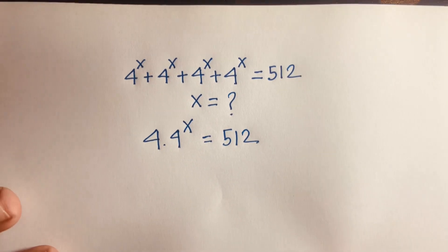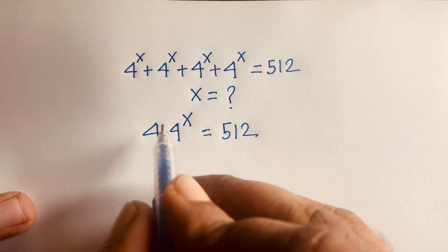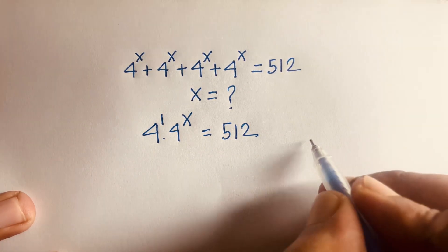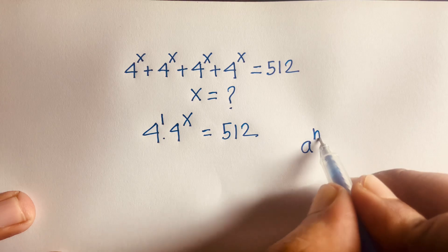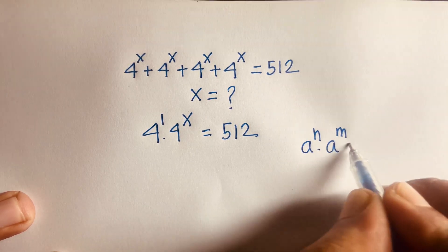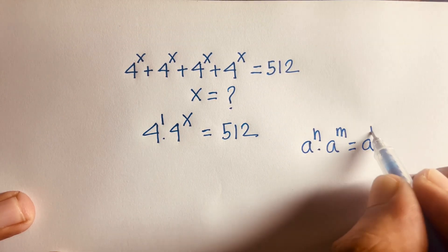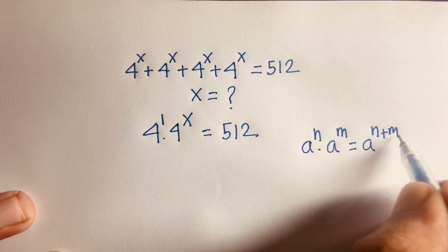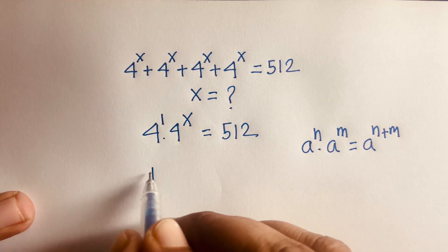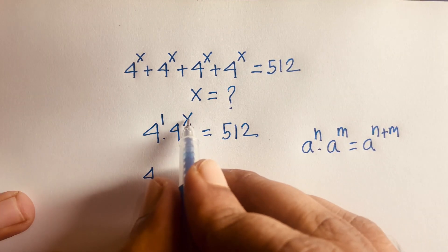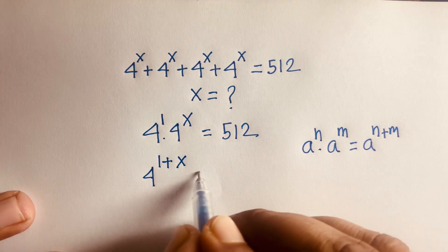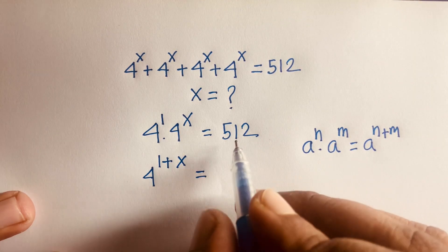Now, the exponent of 4 is 1. You know that a to the power n times a to the power m is equal to a to the power n plus m. According to this rule, I can say here is 4 to the power with this exponent plus this exponent, so 4 to the power 1 plus x is equal to 512.